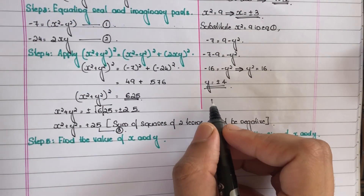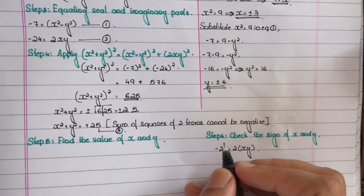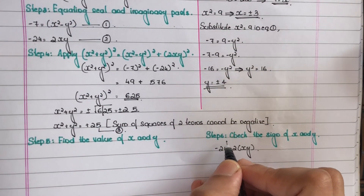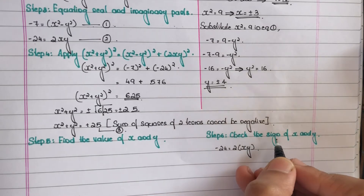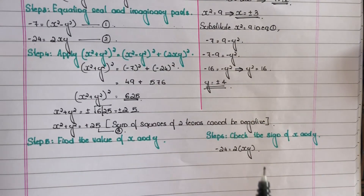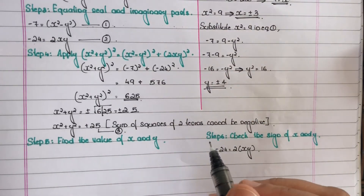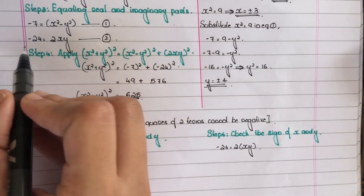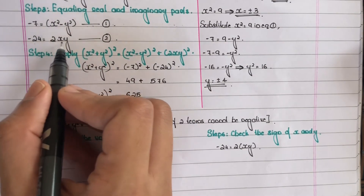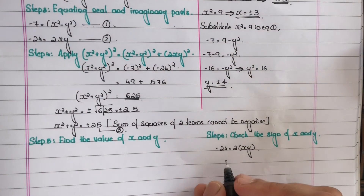Step 6: check the signs of x and y. We consider equation number 2, which is minus 24 equals 2xy. Dividing both sides by 2 gives xy equals minus 12. Since xy must be negative, x and y must have opposite signs.